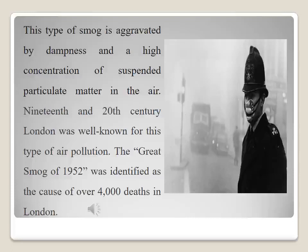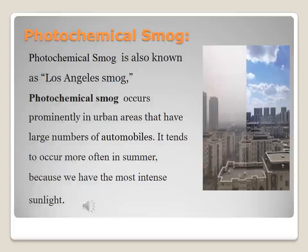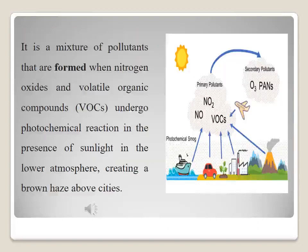The Great Smog of 1952 was identified as the cause of over 4,000 deaths in London. In the 1950s, a new type of smog known as photochemical smog, also called Los Angeles smog, was introduced. It occurs predominantly in urban areas with large numbers of automobiles and tends to occur more often in summer due to more intense sunlight. It is a mixture of pollutants formed when nitrogen oxides and volatile organic compounds undergo photochemical reactions in the presence of sunlight in the lower atmosphere, creating a brown haze over cities.